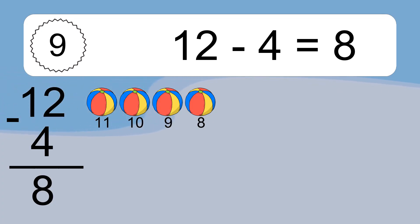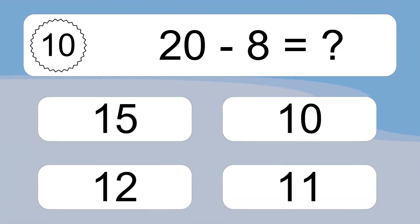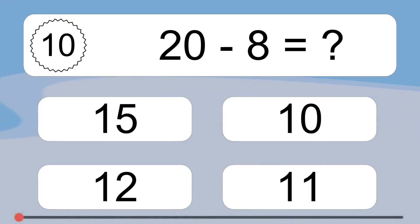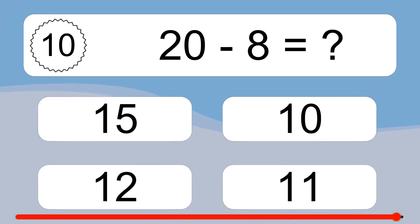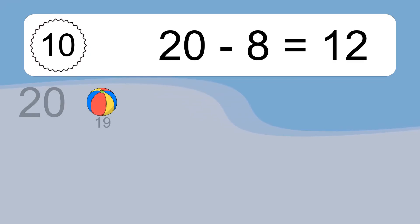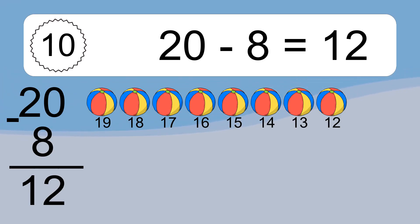20 minus 8 equals what? 20 minus 8 equals 12. Let's count it: 19, 18, 17, 16, 15, 14, 13, 12.